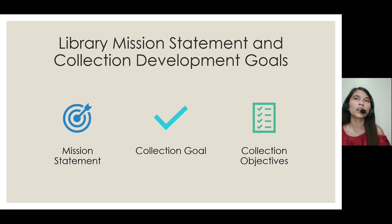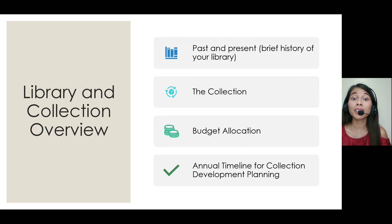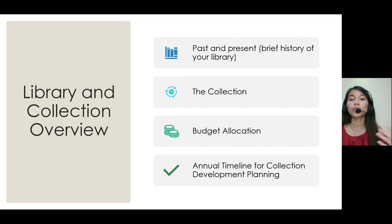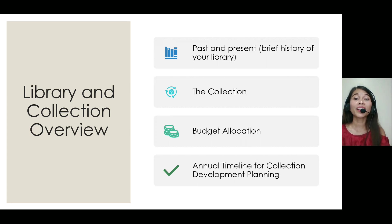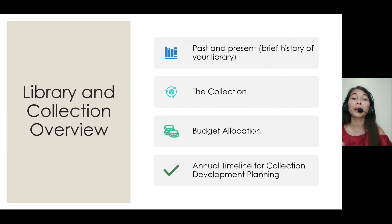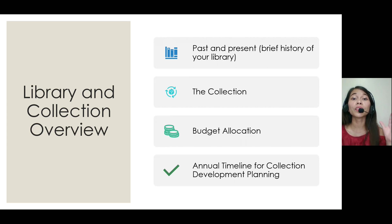What are your objectives? Why are you going to develop your collection? We also need to include in our plan the past and present status of our library, so that librarians and users can compare the development of the library from the past up to the present and see the progress made to enrich the collection. We also include a brief overview of the collection, budget allocation, and the annual timeline for collection development planning.